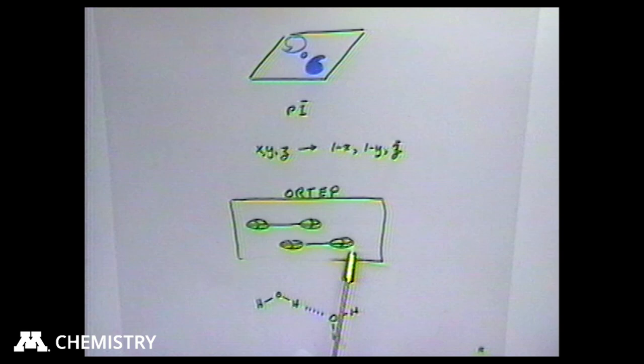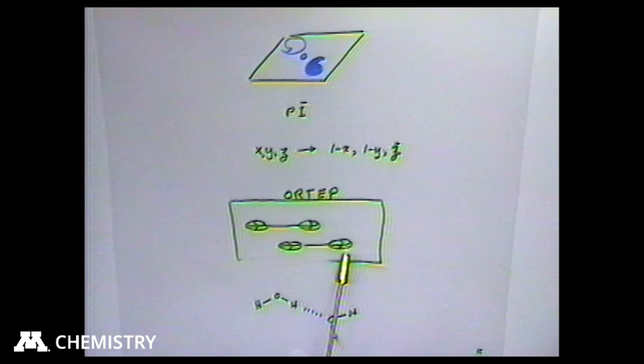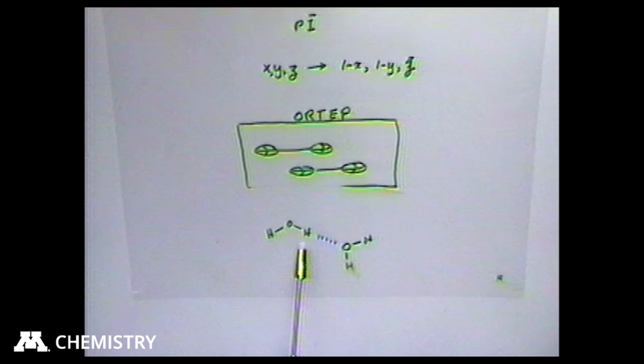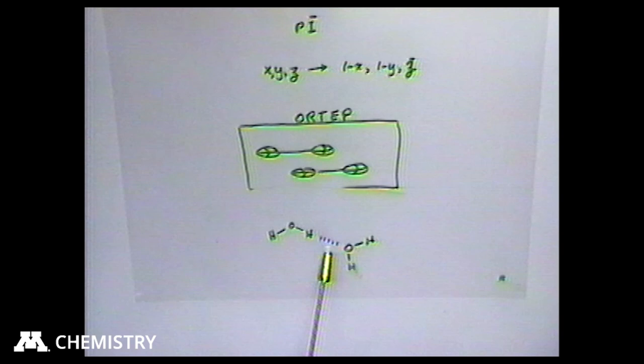We can draw ORTEP pictures — this is getting closer; you see how the atoms are oriented relative to one another. But if you're comparing 50,000 crystal structures, you have 50,000 ORTEPs, and often one ORTEP is a challenge, let alone comparing 50,000. Another more useful way is to draw out the atoms and show the connectivity interaction you're interested in — it might be a hydrogen bond, a charge transfer interaction, or a Van der Waals contact.